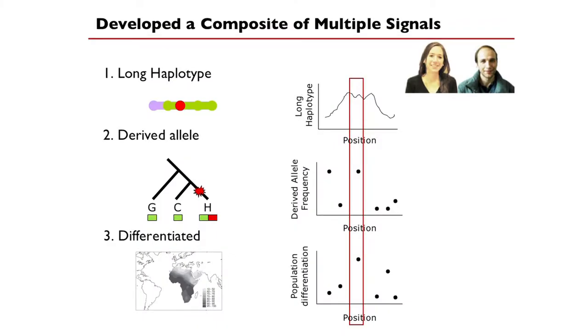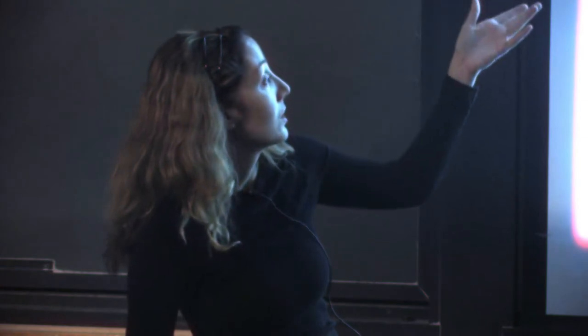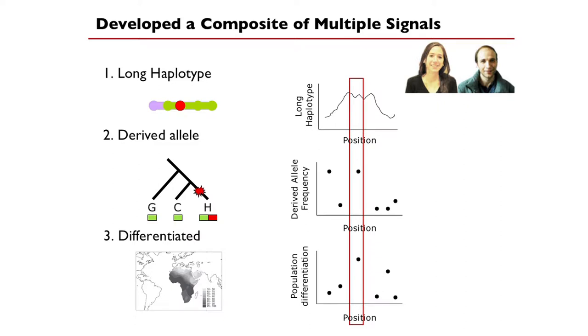We developed something called a composite likelihood statistic — for each mutation in the genome, we take the score it gets by each of these kinds of tests, ask what's the probability this is the causative selected mutation given that score, and sum those likelihoods across all the different tests. We give an ultimate score of its likelihood to be the causative mutation. We call it the Composite of Multiple Signals (CMS) and apply it to all these regions where we really don't know what's going on.